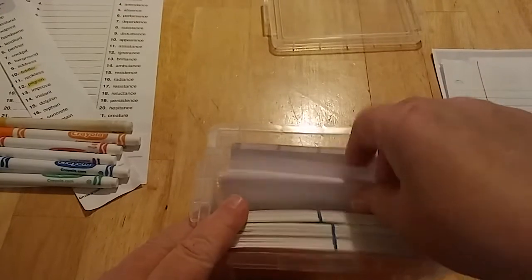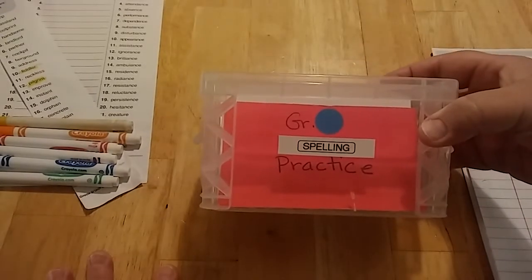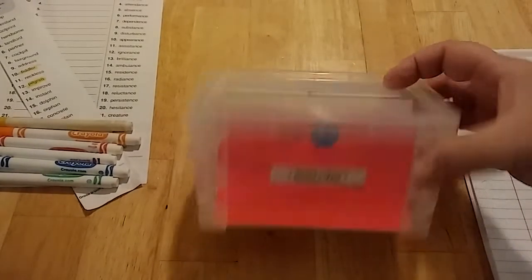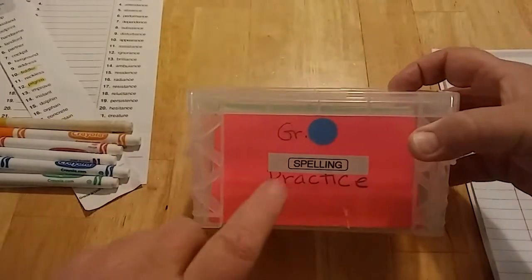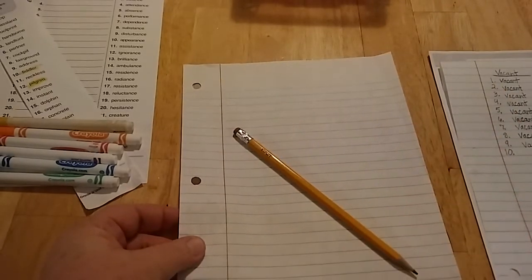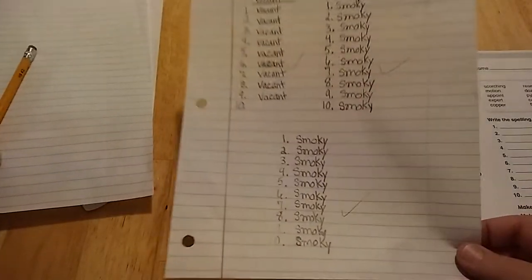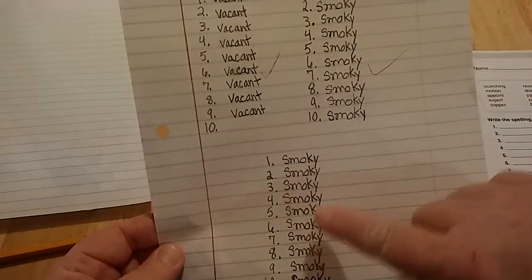So we just pull this out, this whole little index card holder, when it's time to do our spelling and we'll choose a few extras from previous lessons that she's still learning and we'll add that to her writing ten times each. So she'll just get a blank piece of paper and a pencil. This is a sample of how she, on this one she chose to write the word smoky an additional ten times because she chose to put in extra work.